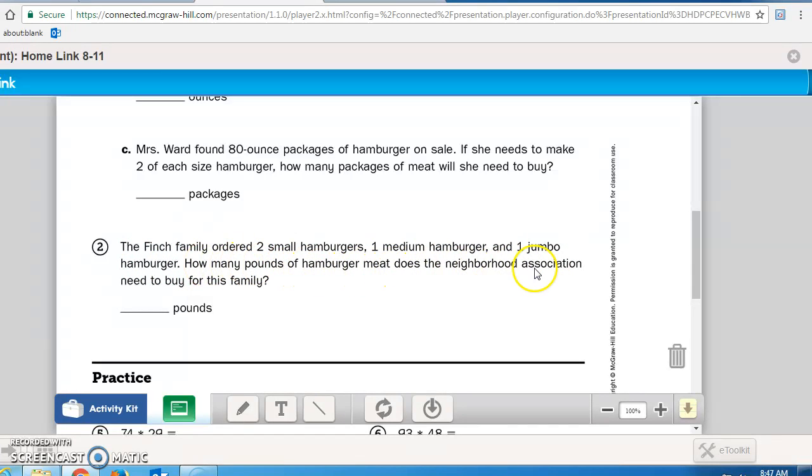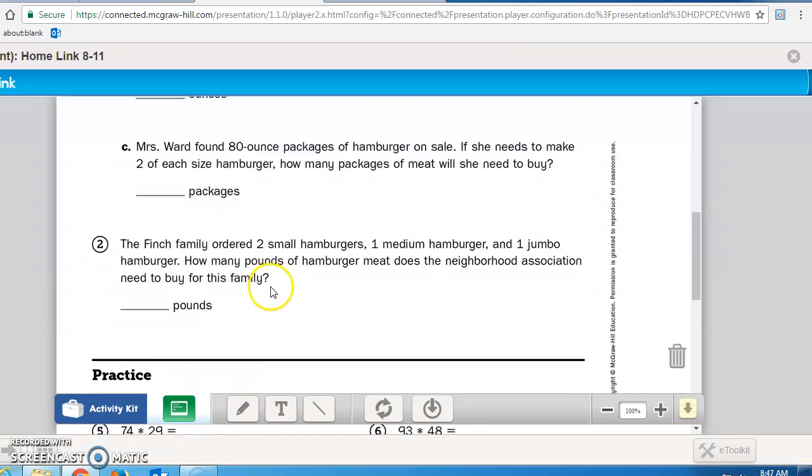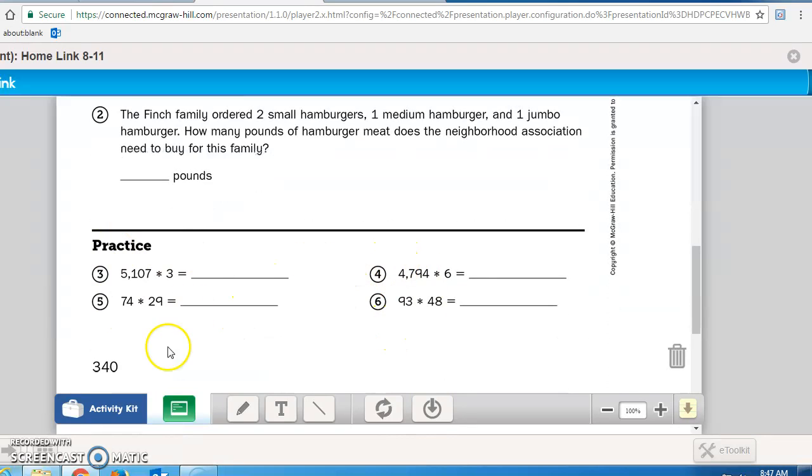Number 2: The Finch family ordered two small burgers, one medium hamburger, and one jumbo hamburger. How many pounds of hamburger meat does the neighborhood association need to buy for this family? And finally, do the practice multiplications on the bottom. Again, bring this Math Masters page 340 up to me once you are done.